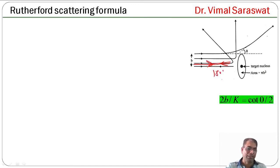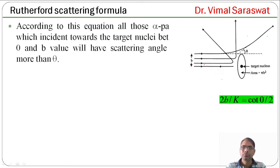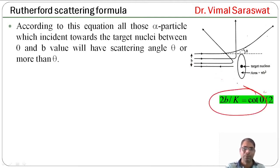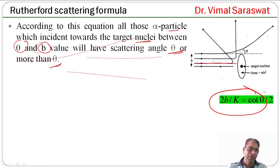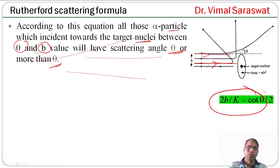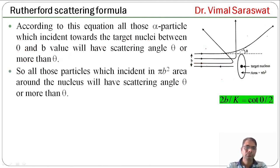After scattering from the nucleus, the alpha particle moves in the scattered direction. According to the impact parameter equation, all those alpha particles which are incident towards the target nuclei between 0 and b will have a scattering angle θ or more. Here 0 means the alpha particle moves exactly towards the nucleus. So all particles incident within the area π·b² around the nucleus will have a scattering angle of θ or greater.